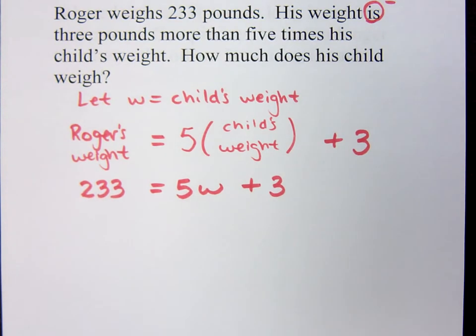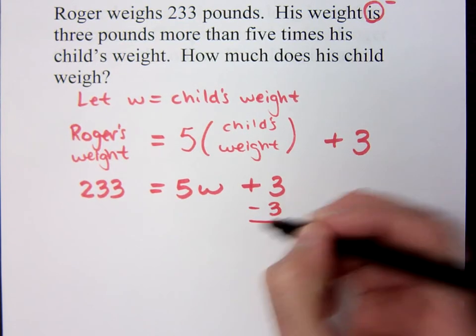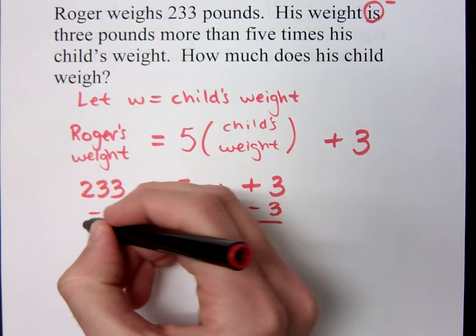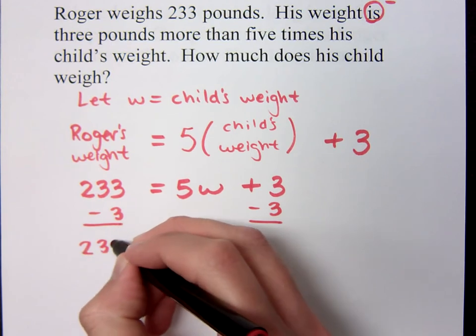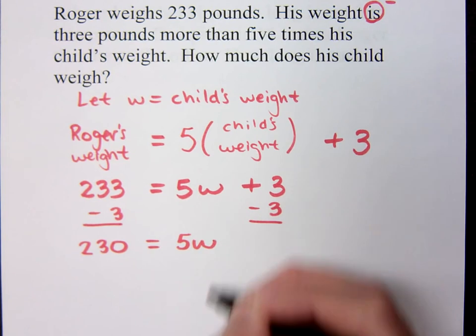So now we have an equation, and we know that once we have an equation, solving it is the easy part, or it should be, right? How do I solve this? Get the variable by itself. And so what's the first thing I do here? Subtract three on both sides. So what do I have now? 230 equals 5W.